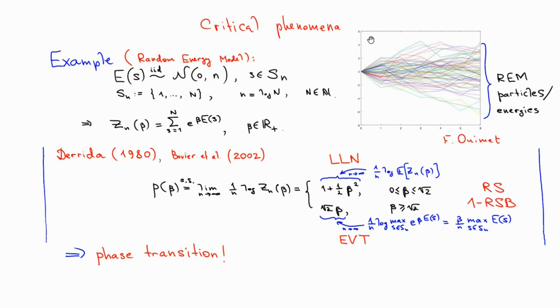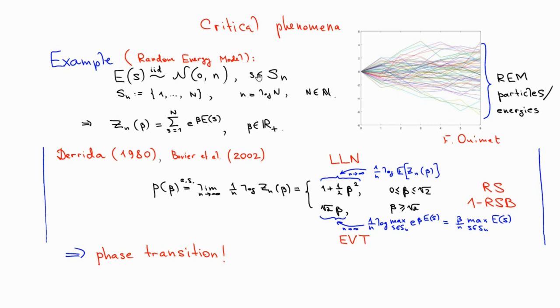For future reference, let me record the following alternative way of generating this field of independent random energies. Namely, at time zero, we can start capital N independent random walkers with increment distribution given by standard Gaussians. And after little n steps, those will end up in positions which are in distribution exactly like here.